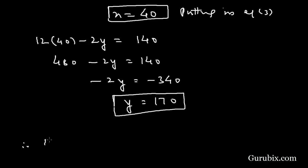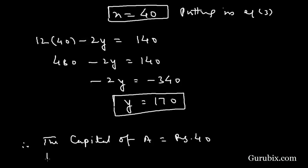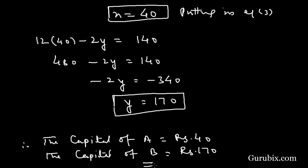Therefore, the capital of A is rupees 40 and the capital of B is rupees 170. This is the solution of the question. Thank you.